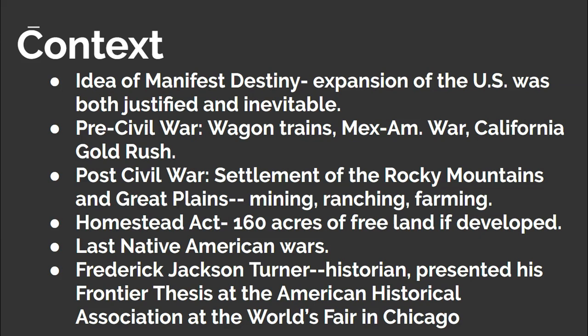In 1890, the U.S. Census Bureau declared that the frontier was closed, which meant that there was no more land from the West Coast to the East Coast of the contiguous United States that was not under the control of the U.S. or state governments. This is where our author and historian steps in, Frederick Jackson Turner.